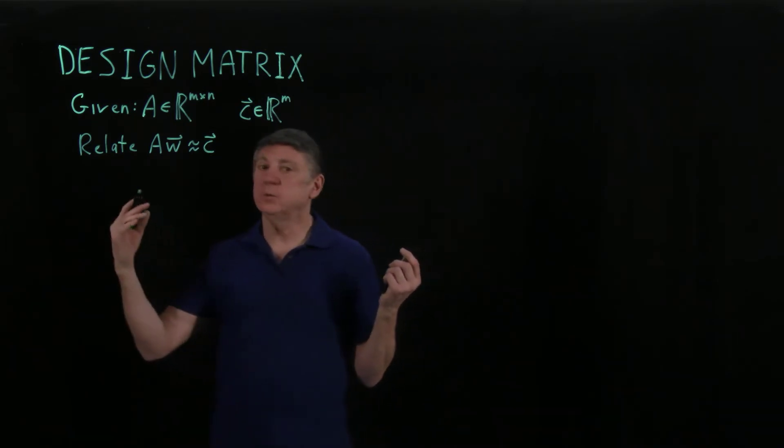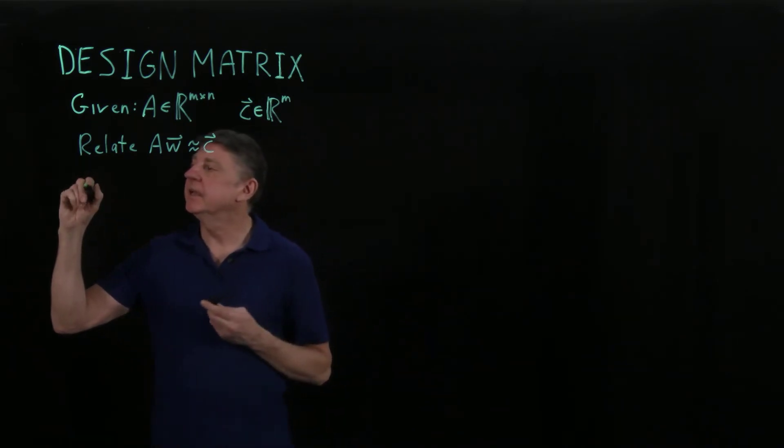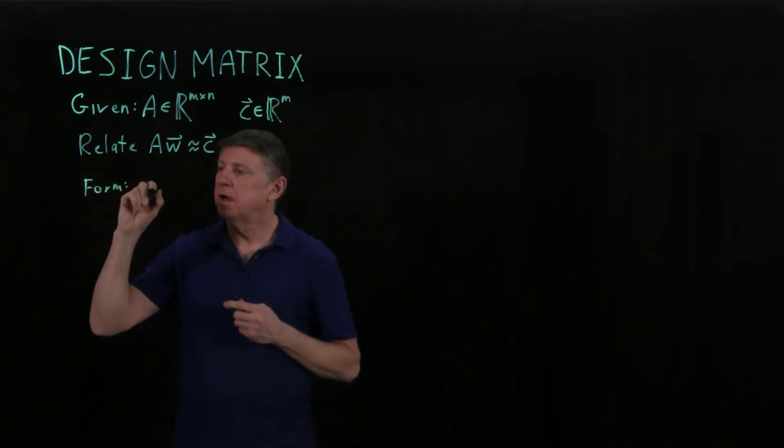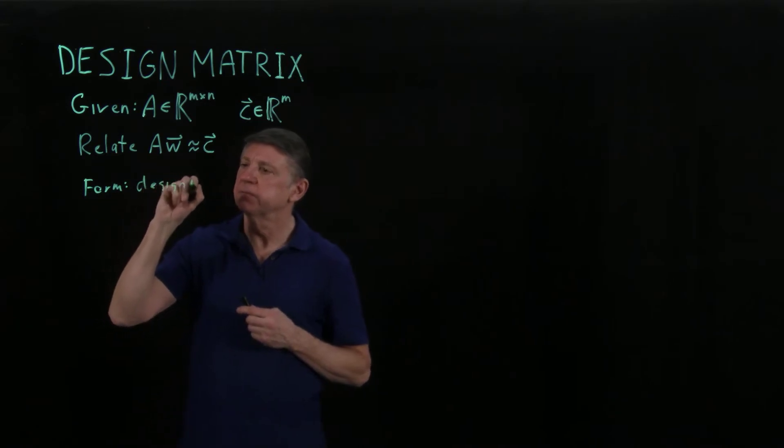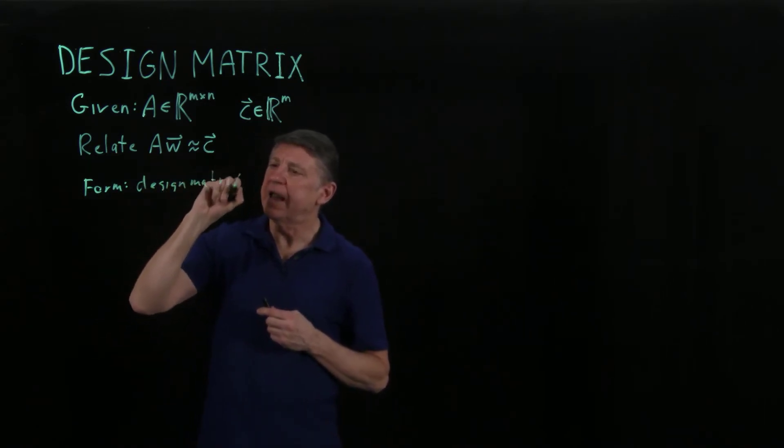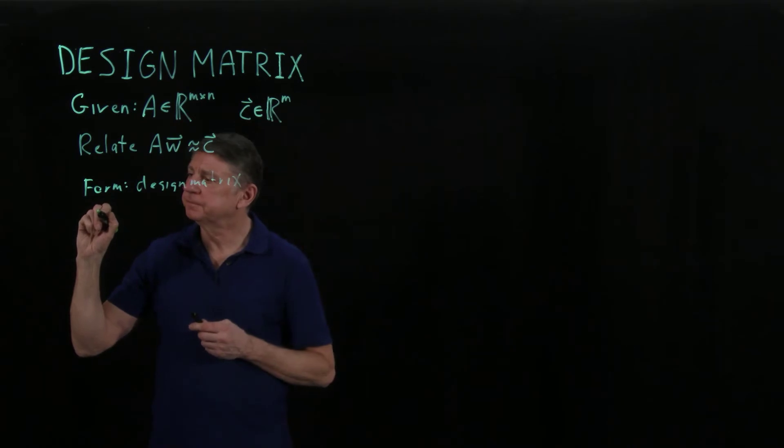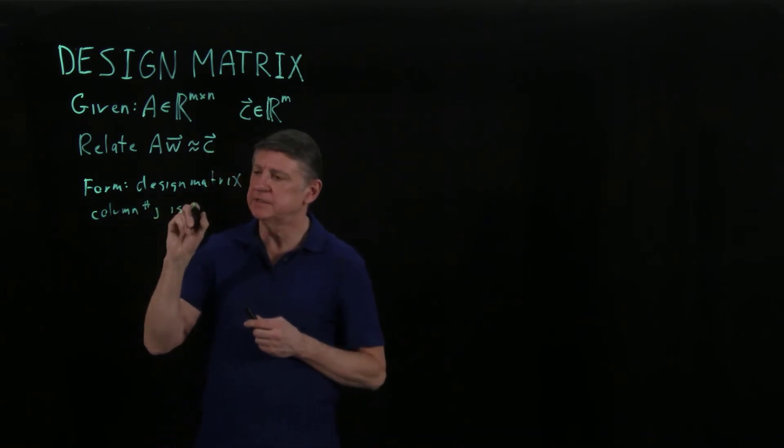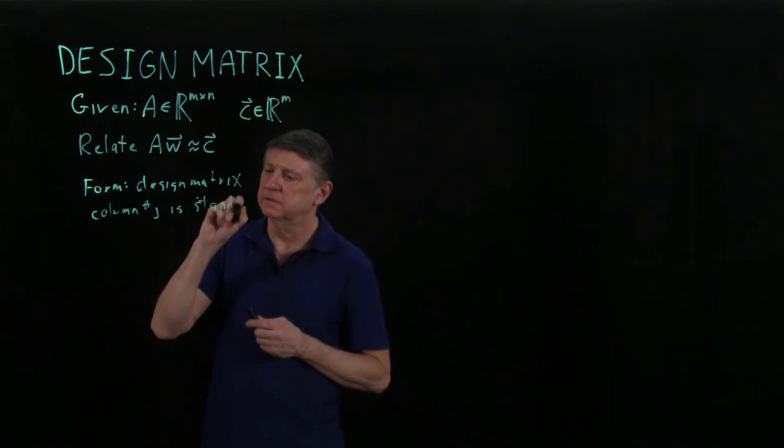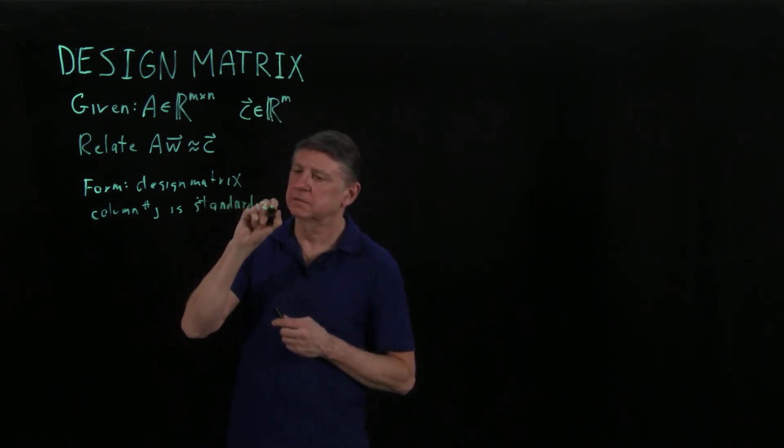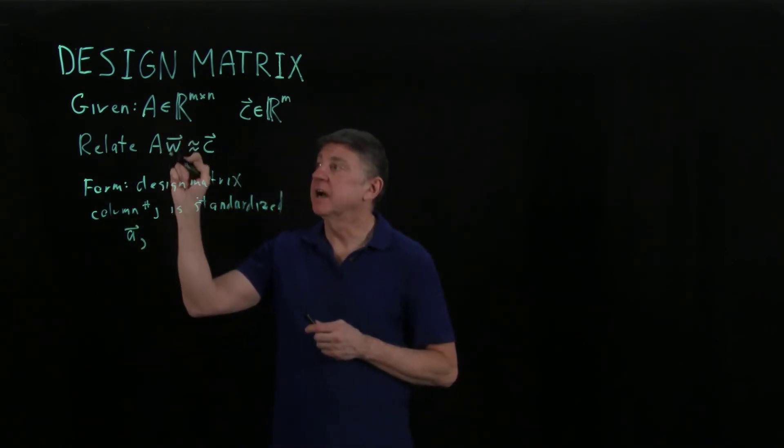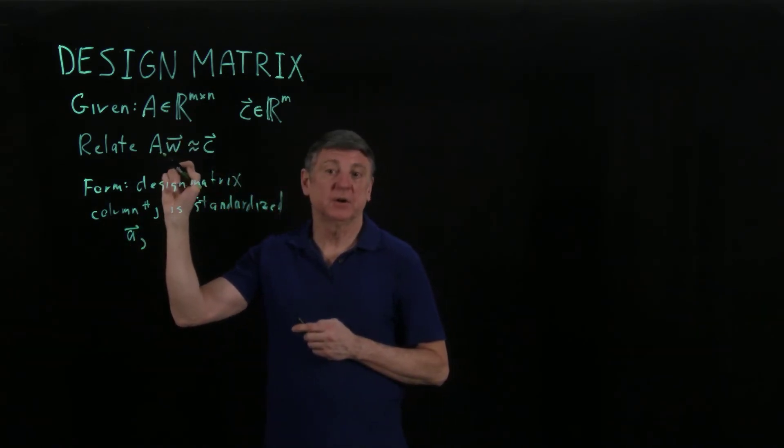The way we usually do this is we form a design matrix. Each column, say column J, is the standardized version of vector J from our data matrix A.